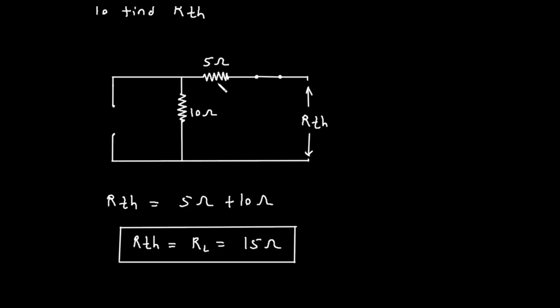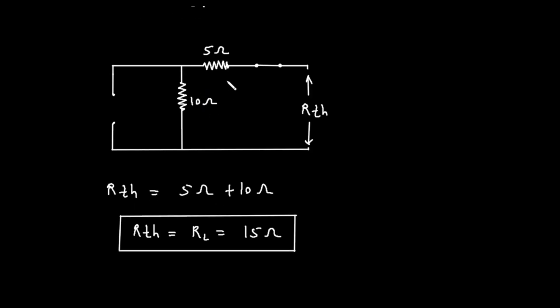Because the current source was replaced by an open circuit, there is no other path for the current to take. The 5 ohm resistor and the 10 ohm resistor are now connected end-to-end, forming a single path. When components are connected in this way, they are said to be in series. To find the total or equivalent resistance of resistors connected in series, we simply add their individual resistances.